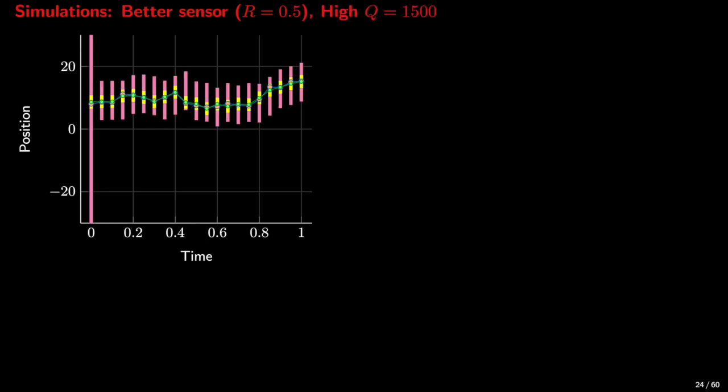And this is what happens if we have a good sensor but a highly uncertain system. We will have a large prediction variance, but a small error variance after the measurement update.